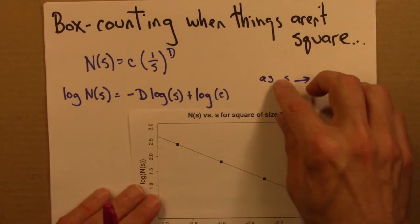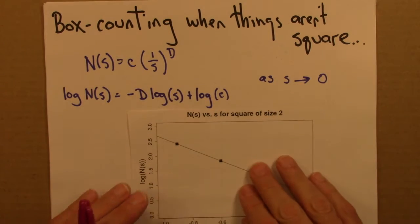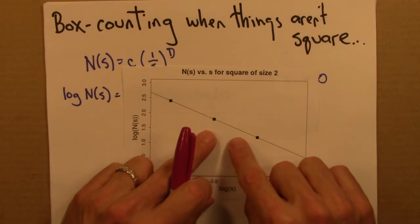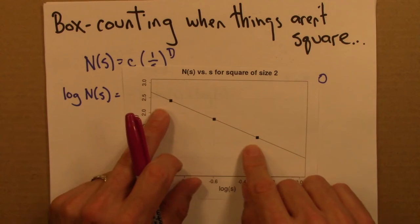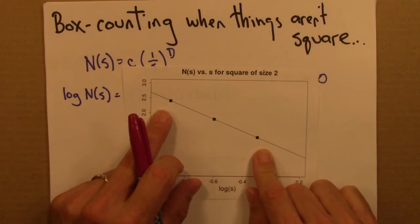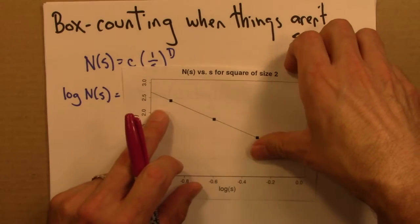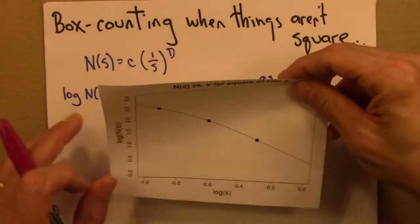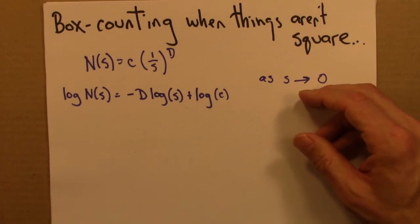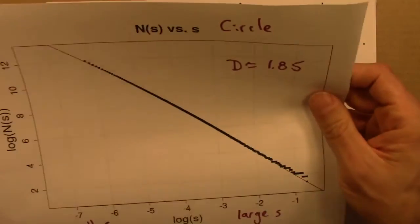But, alas, the world is more complicated than just squares, and so box counting and log-log plots are a bit trickier, have a number of subtleties and challenges associated with them. I'm going to illustrate this with two examples. And the first is, what happens if I do box counting on a circle?